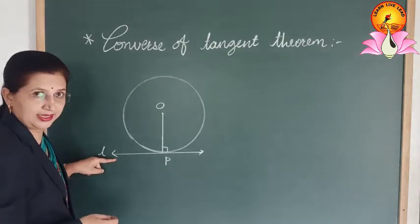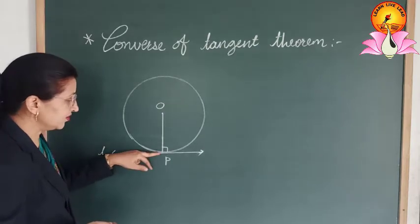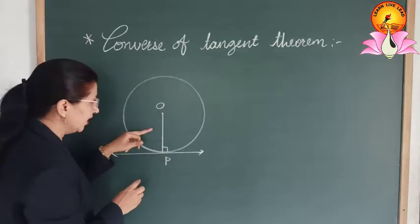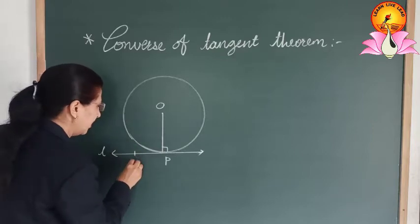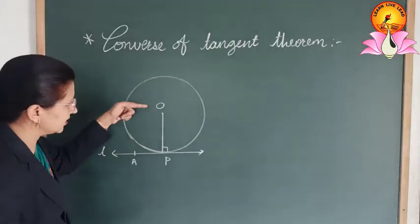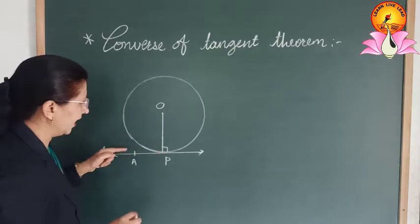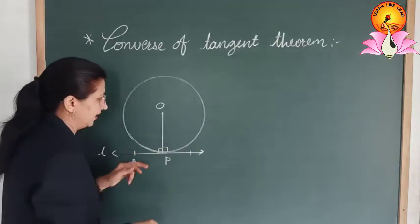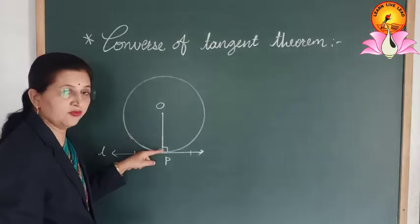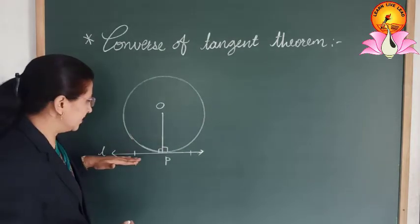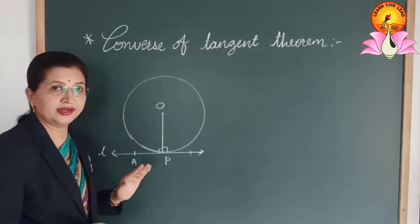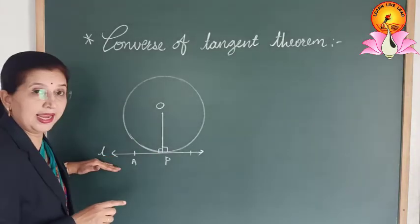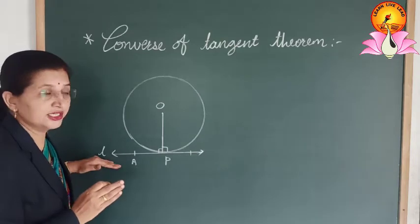Here, this line L is touching the circle at point B and OP is the radius, at point A. You can see that angle OPA is 90 degrees. This means that this line is perpendicular to the radius at the point of contact, and therefore this line L is a tangent to the circle.